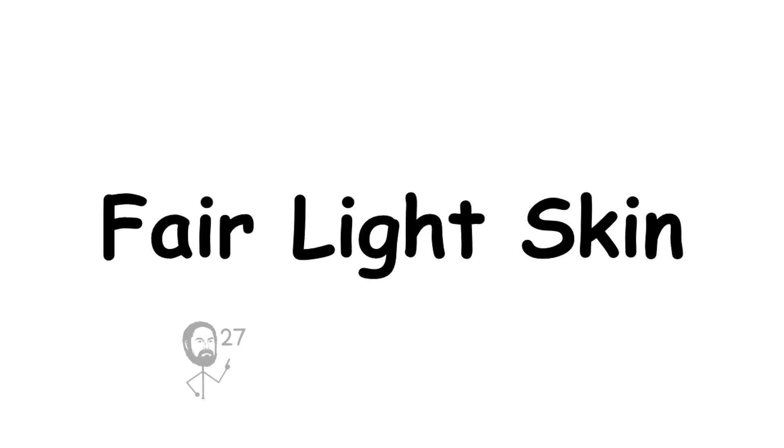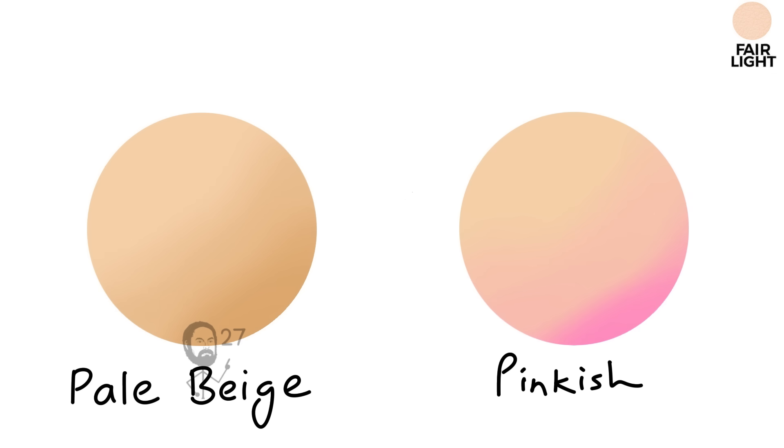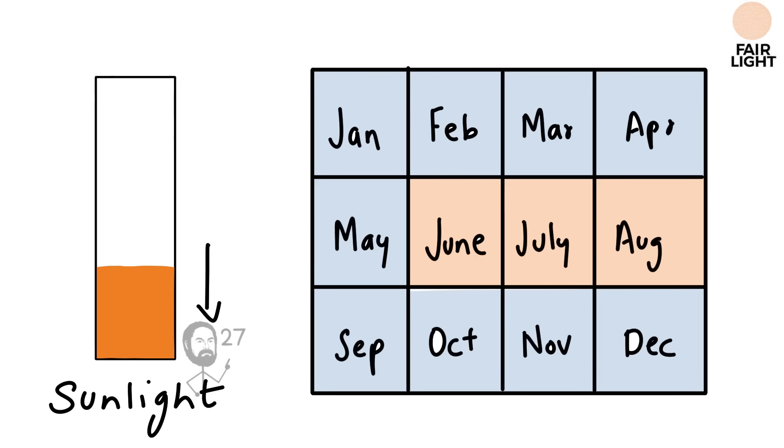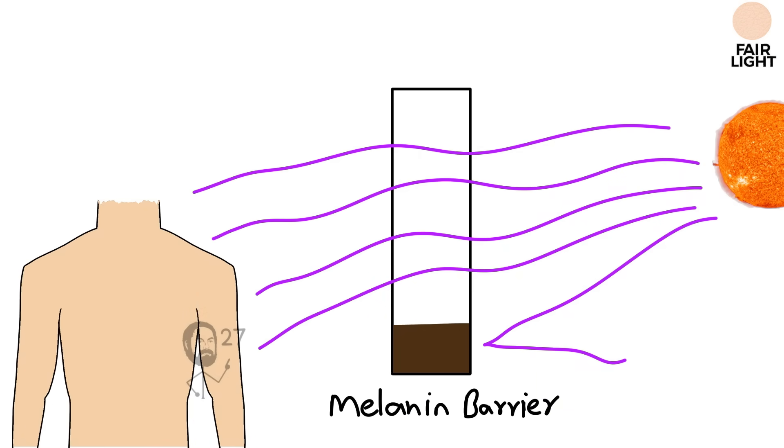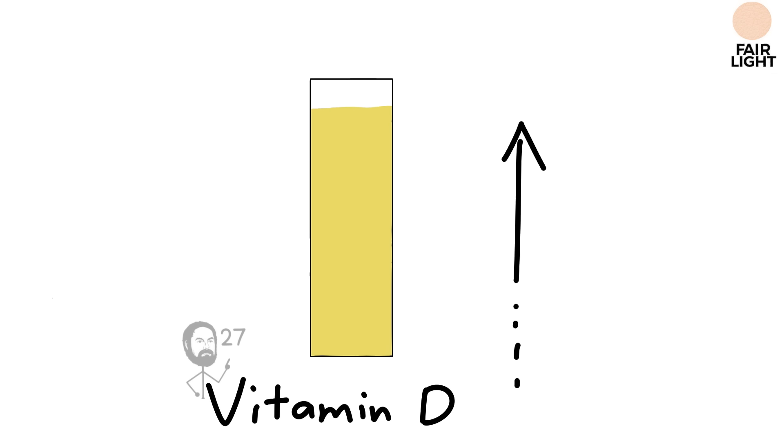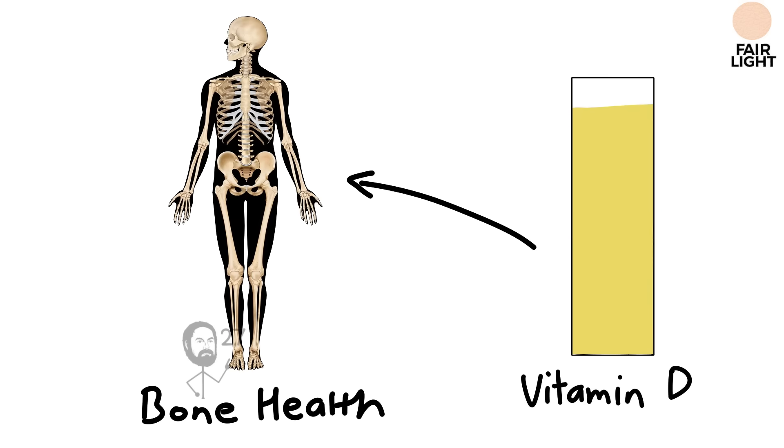Fair light skin contains relatively low levels of melanin, giving it a pale beige or pink shade. This tone developed primarily in central and northern Europe, where sunlight is limited for much of the year. With less melanin acting as a barrier, the skin absorbs ultraviolet radiation more efficiently, which boosts the production of vitamin D. In environments where winter skies are gray and the sun rarely shines at high intensity, this ability was critical for bone health and immune strength, helping populations avoid diseases linked to deficiency.